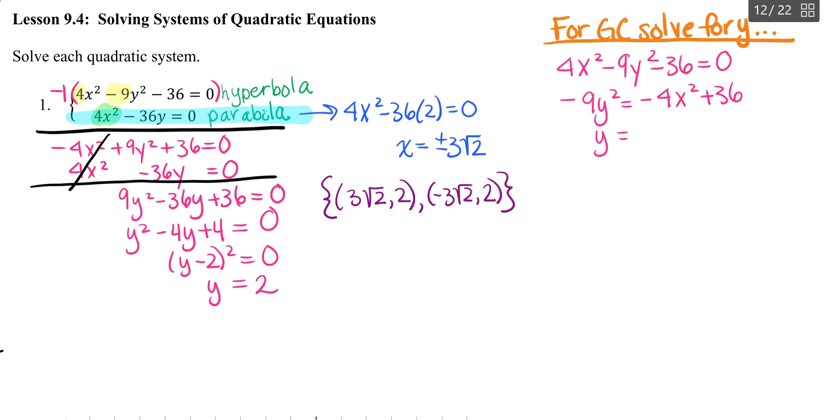Divide by my negative 9. I'm just going to write it as negative 1 ninth times the quantity of negative 4x squared plus 36. And then, that's y squared, and then take the square root.